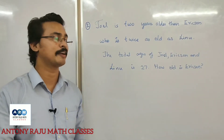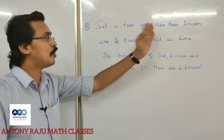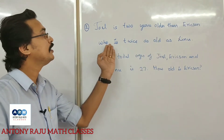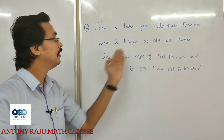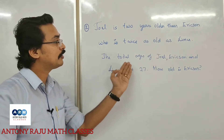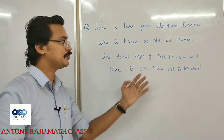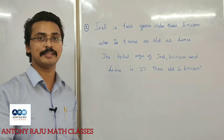The second question: Joel is 2 years older than Erickson, who is twice as old as Linum. The total age of Joel, Erickson, and Linum is 27. How old is Erickson?